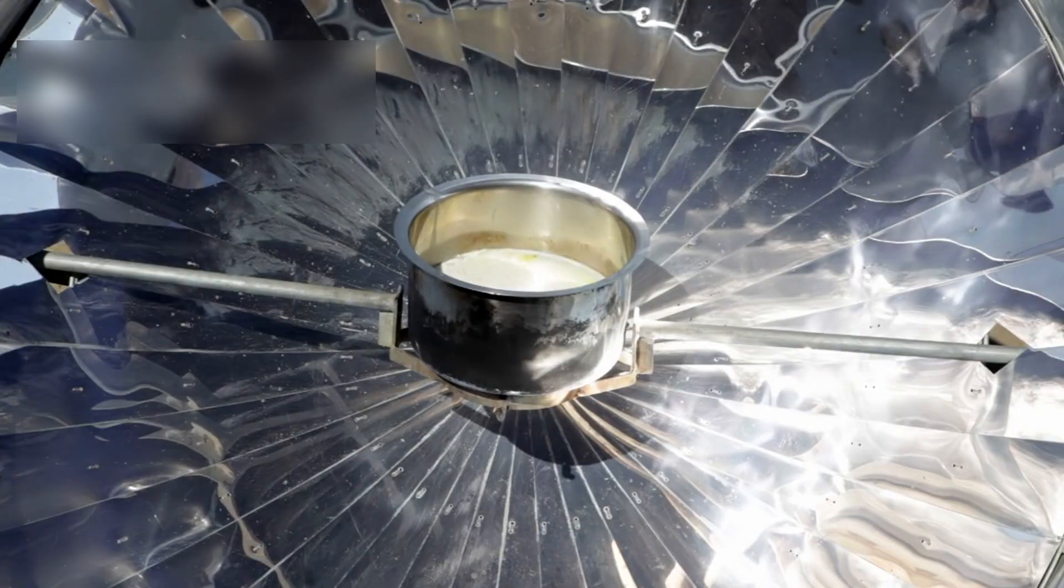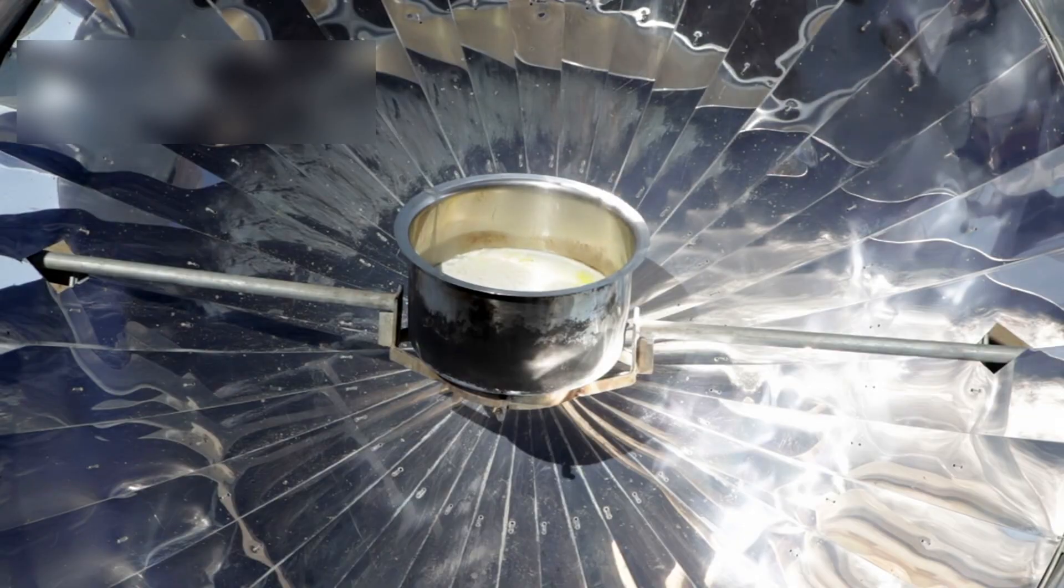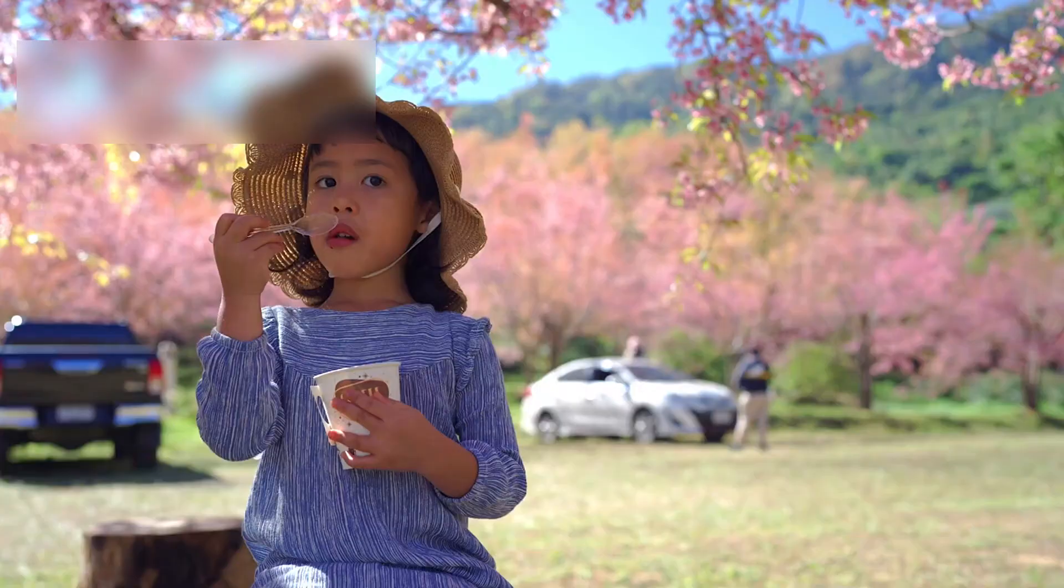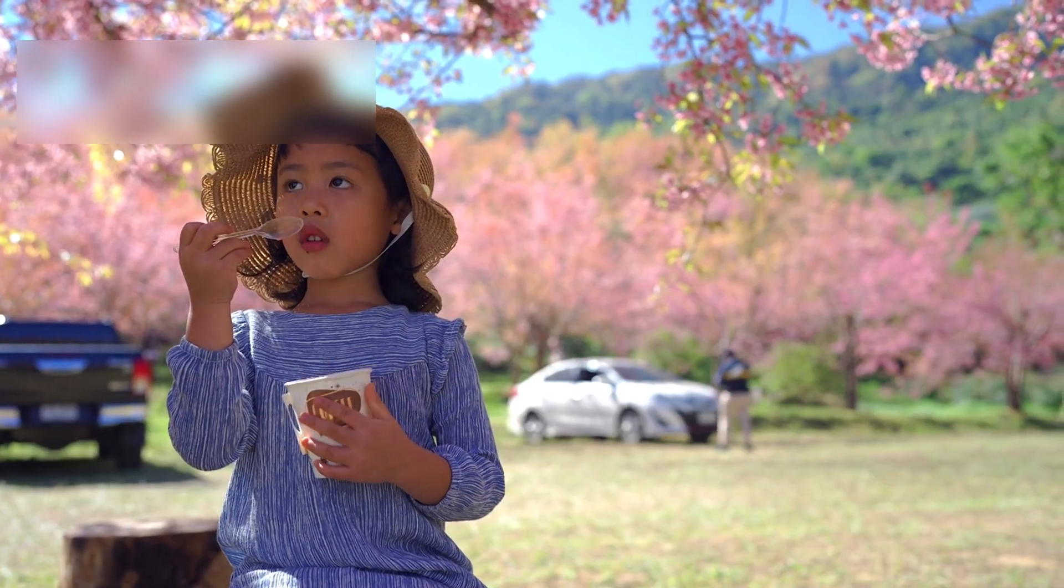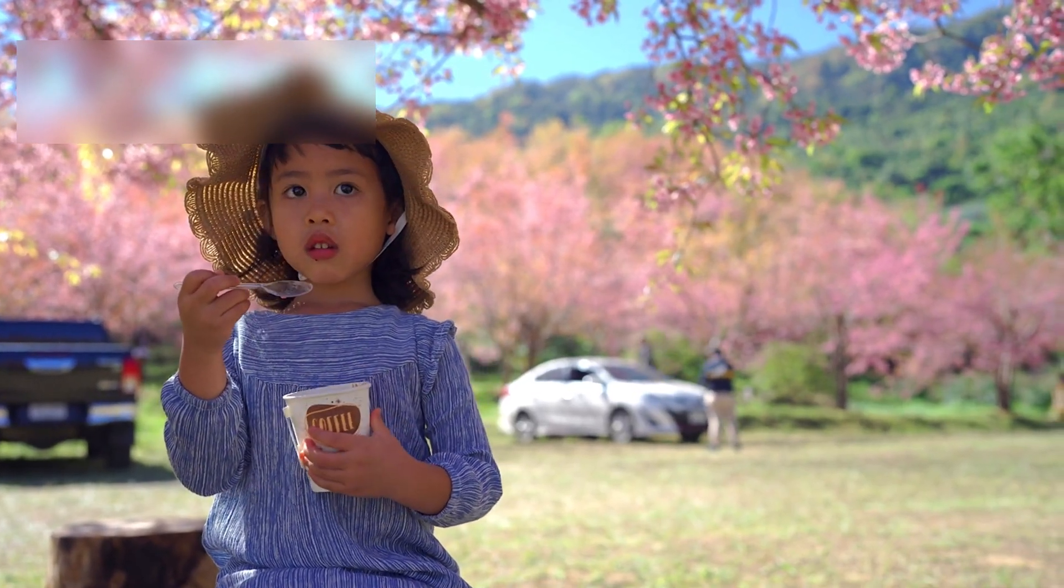The Parker Solar Probe, skimming the edges of the sun's corona, detected a wave pattern that matched no known model. Instead of flowing uniformly, the solar wind was curling, spiraling around a moving focal point. When mapped, that focal point aligned perfectly with the coordinates of 3I Atlas.